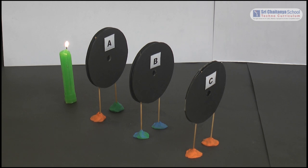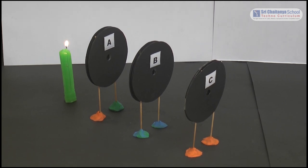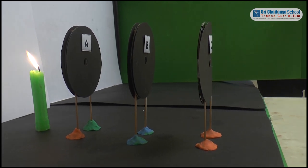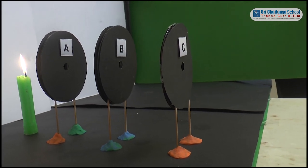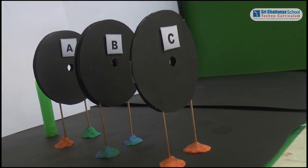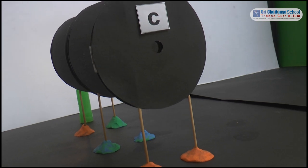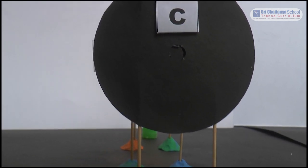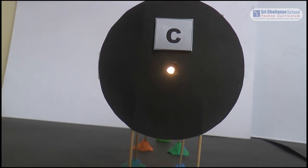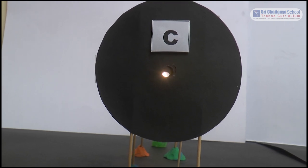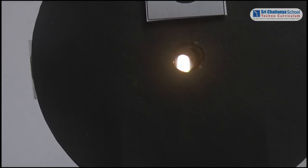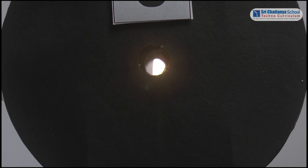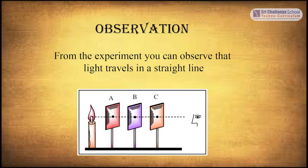Look through the hole of the cardboard marked as C. You can see the light of the candle flame. What did you observe, my dear children? From the experiment, you can observe that light travels in a straight line.